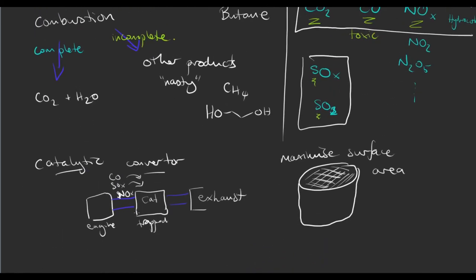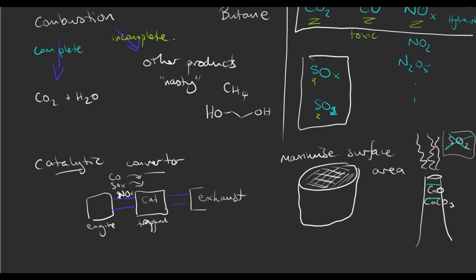If you had a factory chimney with gases coming out and you wanted to remove sulfur dioxide, you would take advantage of the fact that sulfur dioxide can act a bit like an acid. You might use calcium oxide or calcium carbonate, which would react with the sulfur dioxide and trap it so that all that comes out is acceptable emissions. So sulfur dioxide can be removed from flue gases using either calcium oxide or calcium carbonate.